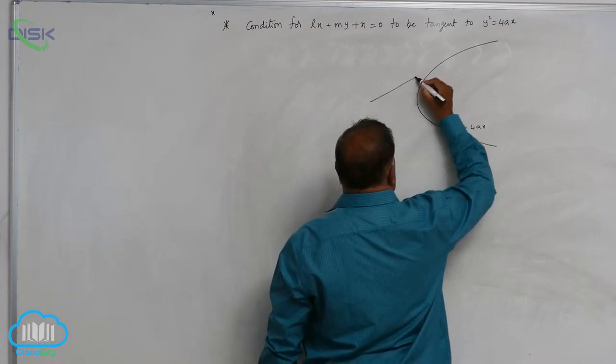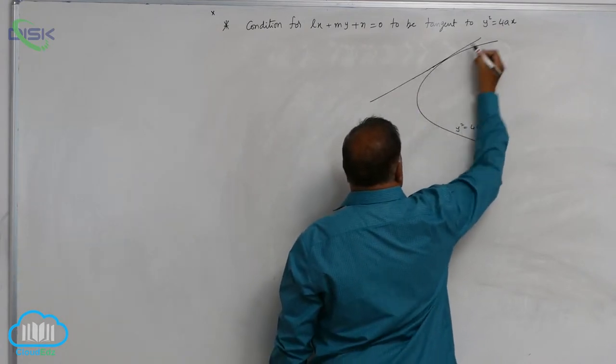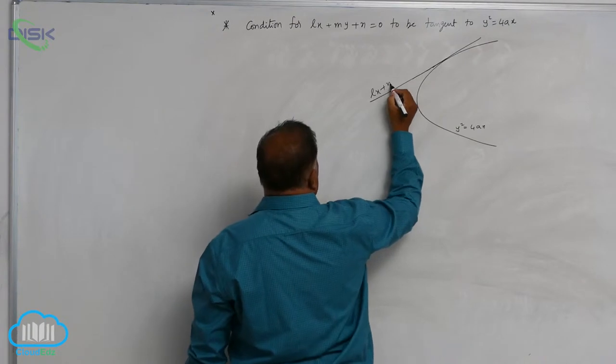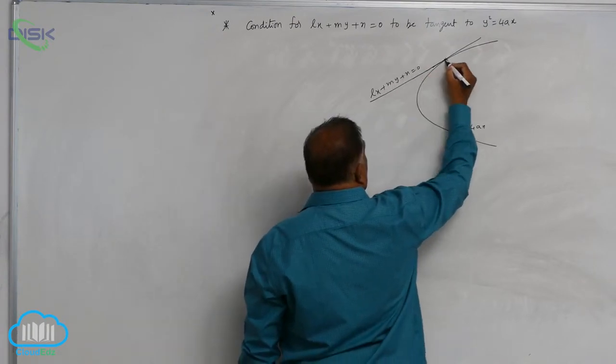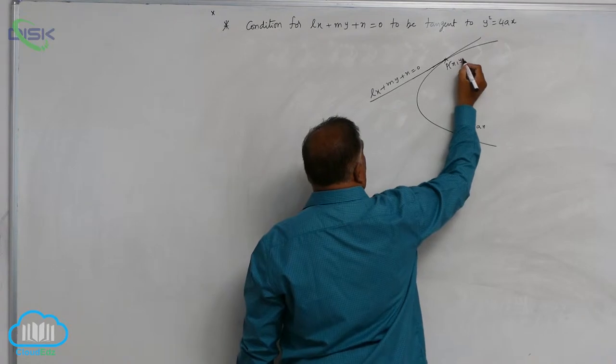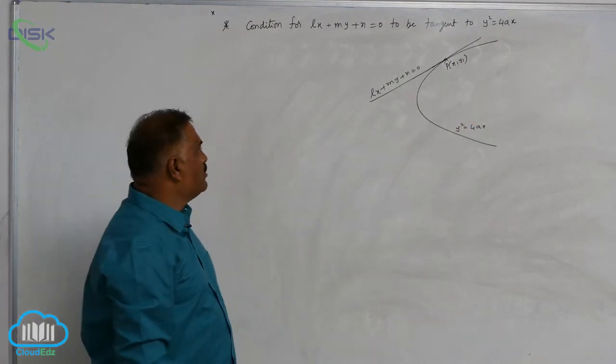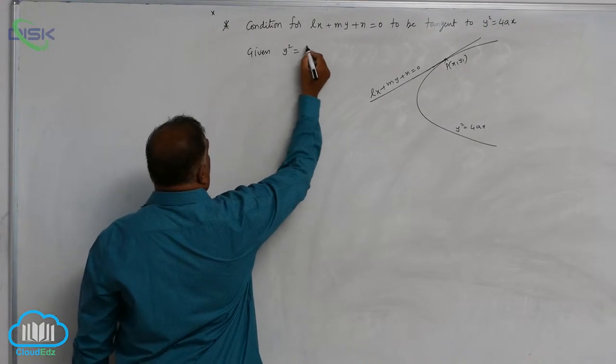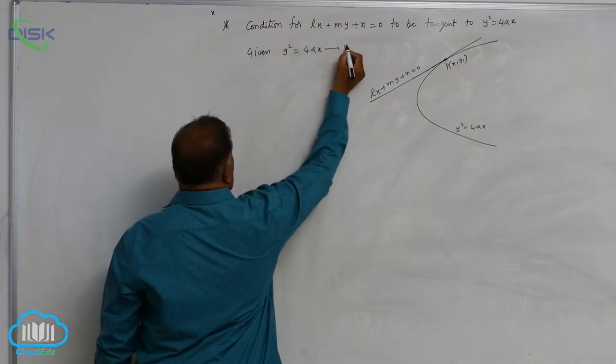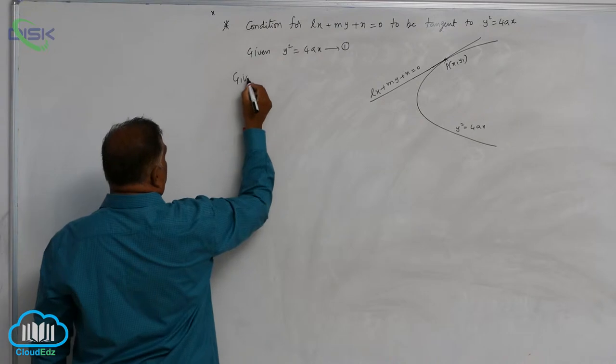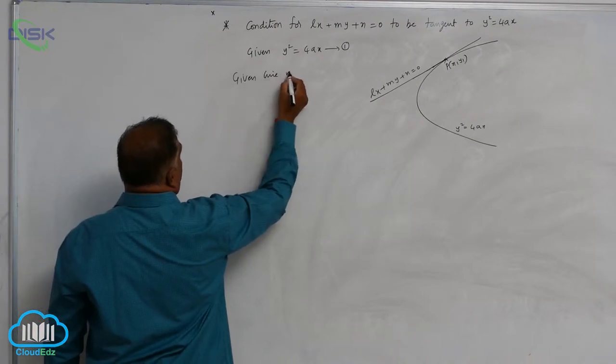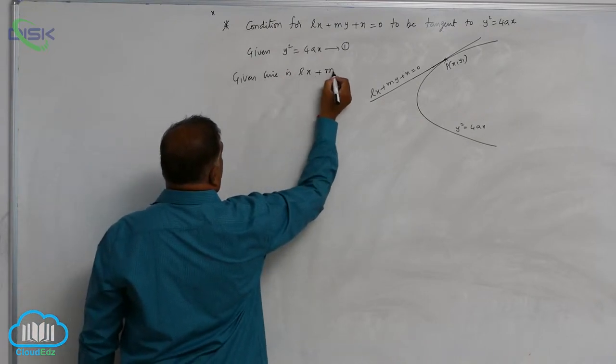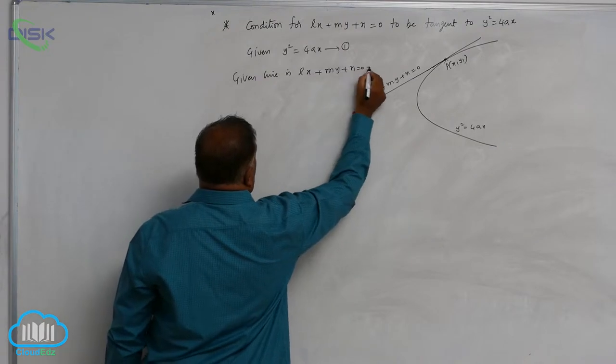The given line Lx plus My plus N equal to 0 touches the curve at x1 comma y1. We will write: given parabola is y square equal to 4Ax, equation 1; given line is Lx plus My plus N equal to 0, equation 2.